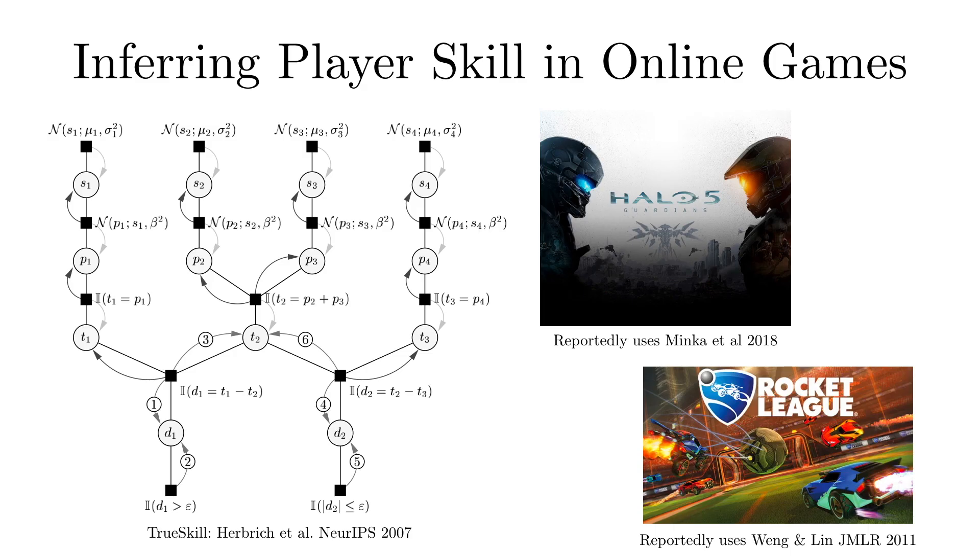Player skill estimation in online video games provides another fun example of probabilistic latent variable modeling. You'd like to estimate player skill in order to match people up so that they have a good time. However, the outcomes of the games are noisy, and in multiplayer games, you only get weak information about the individual skill levels. Probabilistic models are used to estimate skill for games played by millions of people every day.